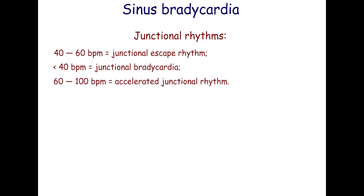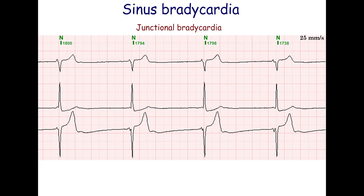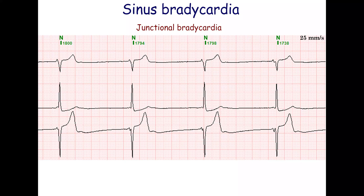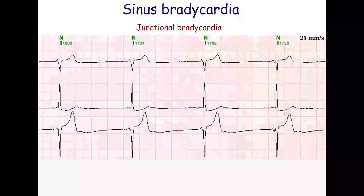A rate from 60 to 100 beats per minute is characteristic of an accelerated junctional rhythm. In junctional rhythms, the QRS complexes are narrow in the absence of bundle branch block. If a P-wave occurs very close to a QRS complex, in less than 120 milliseconds, and there is no evidence of pre-excitation, then the rhythm originates from the upper part of the junctional region.